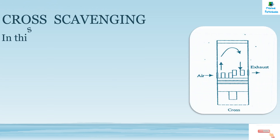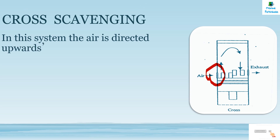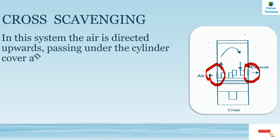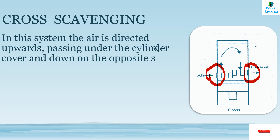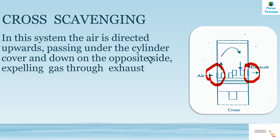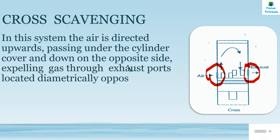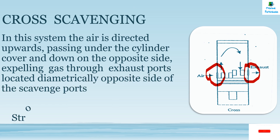Cross flow scavenging: here we can see that the scavenged ports and the exhaust ports are placed diametrically opposite to each other in the cylinder liner. Air is directed upwards, passing under the cylinder cover and down to the opposite side, expelling exhaust gas through the exhaust ports located diametrically opposite the scavenged ports.